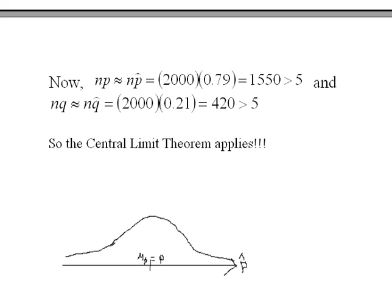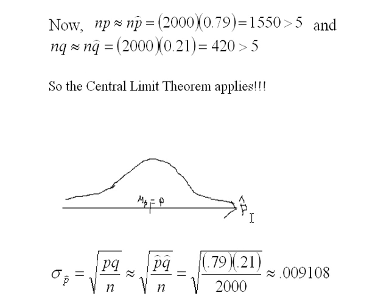What does that really mean for us? For proportions, if we took millions and millions of samples of size 2,000 and looked at the proportion of people with errors in their credit reports, then these p̂ values would form a nice normal curve. The mean of the p̂ values would equal the true proportion of the population with errors. Also, the standard deviation of p̂, sigma sub p̂, equals the square root of PQ over n, which is approximately the square root of p̂q̂ over n — which is almost 1%, or 0.009108.